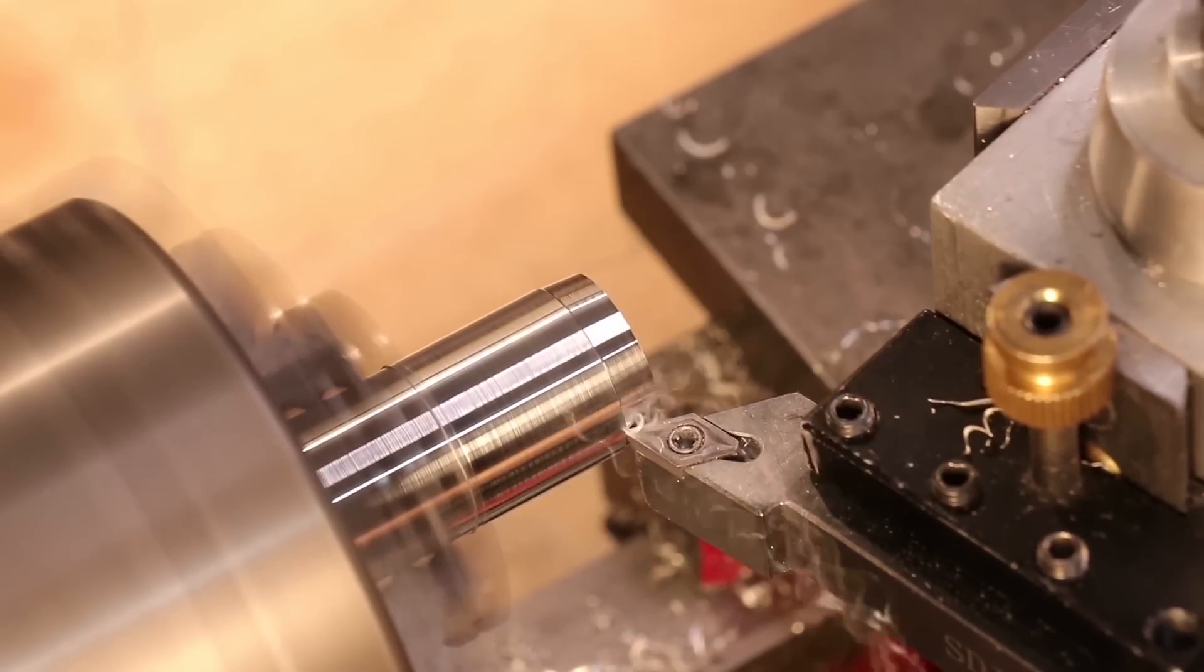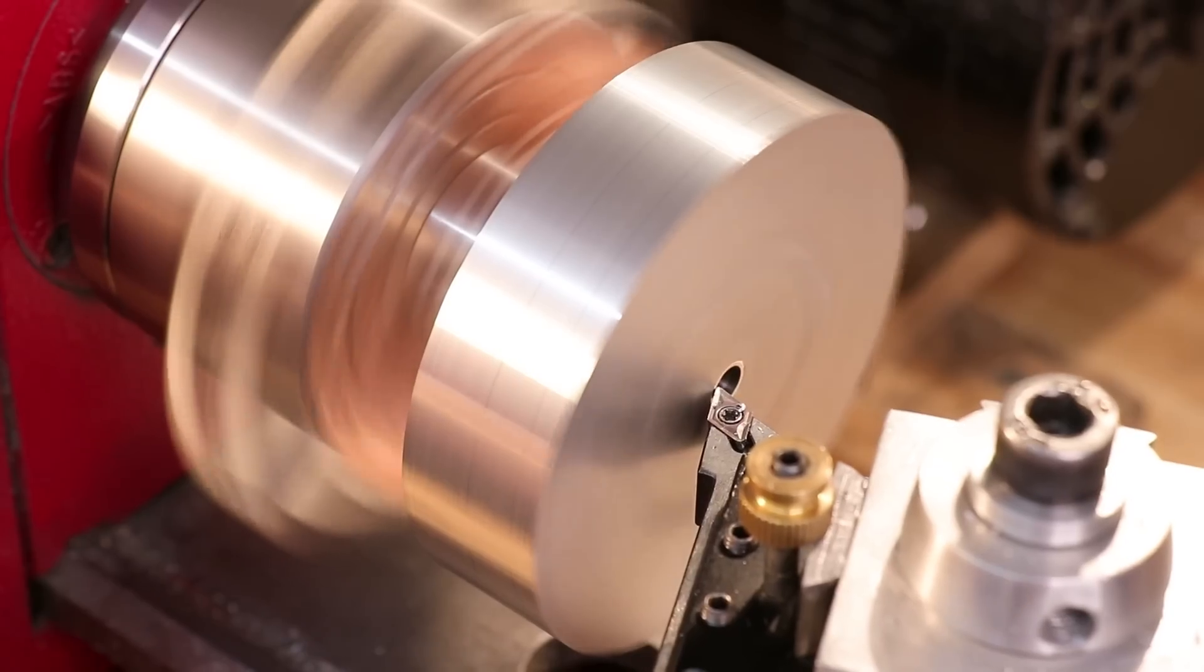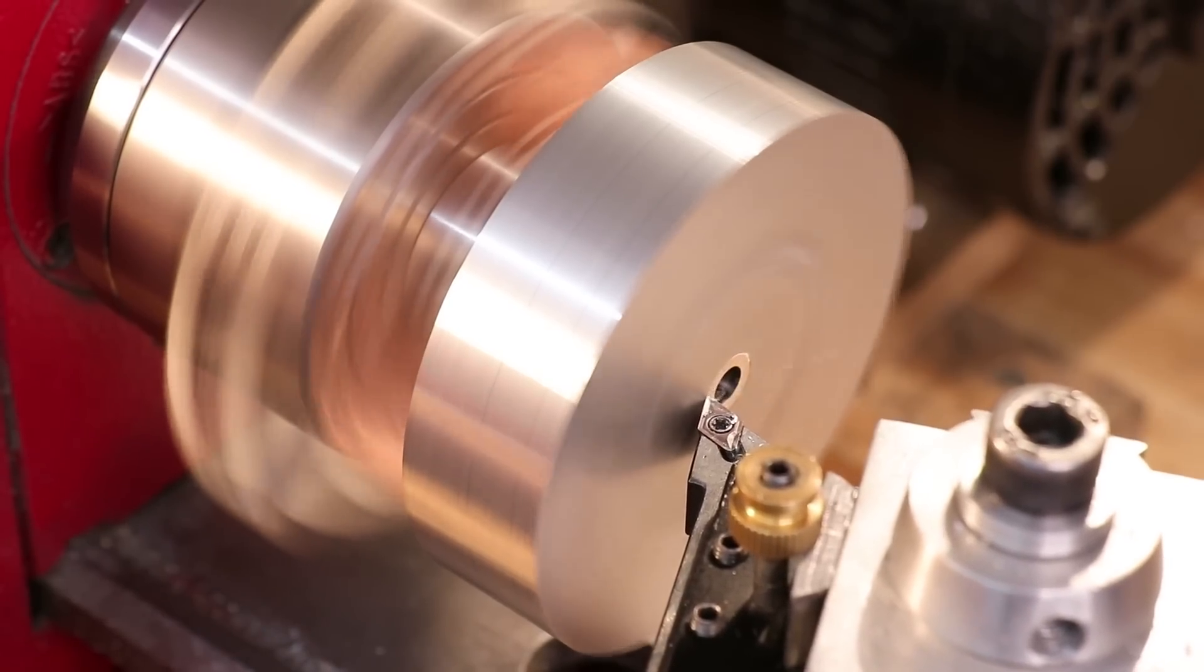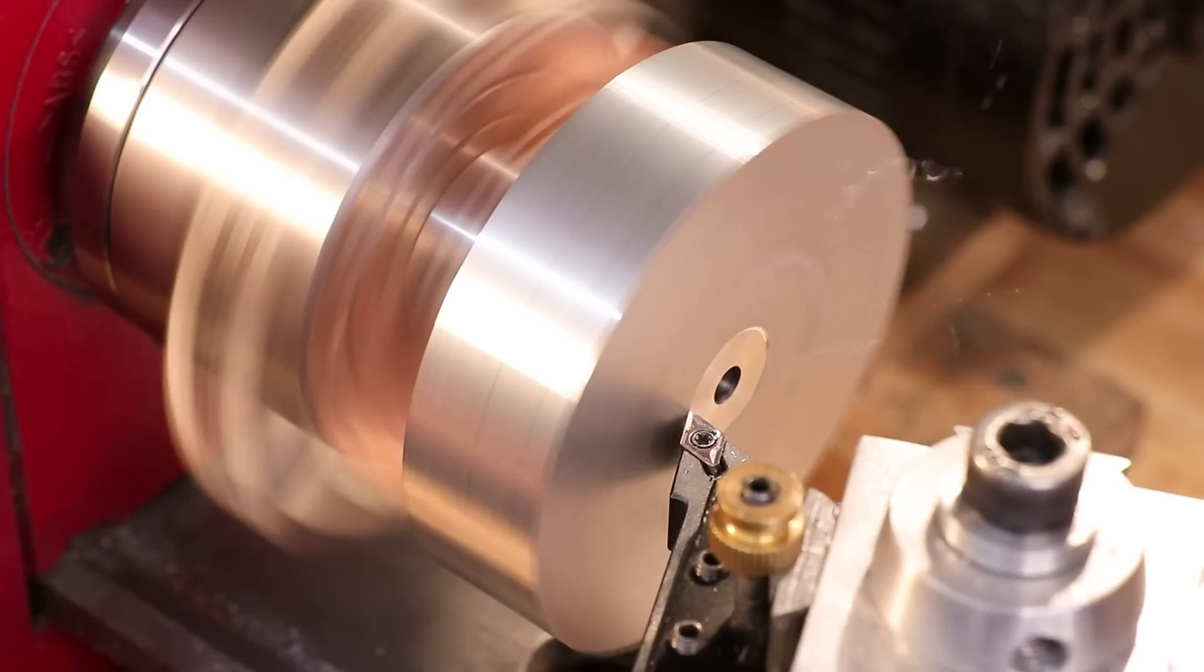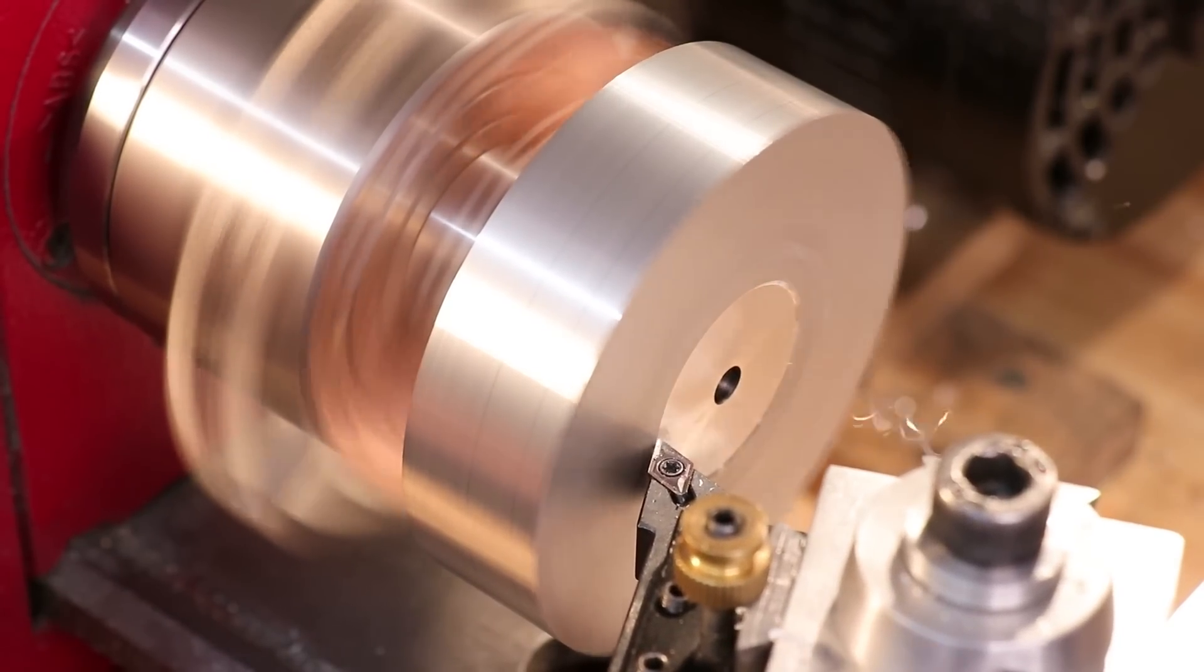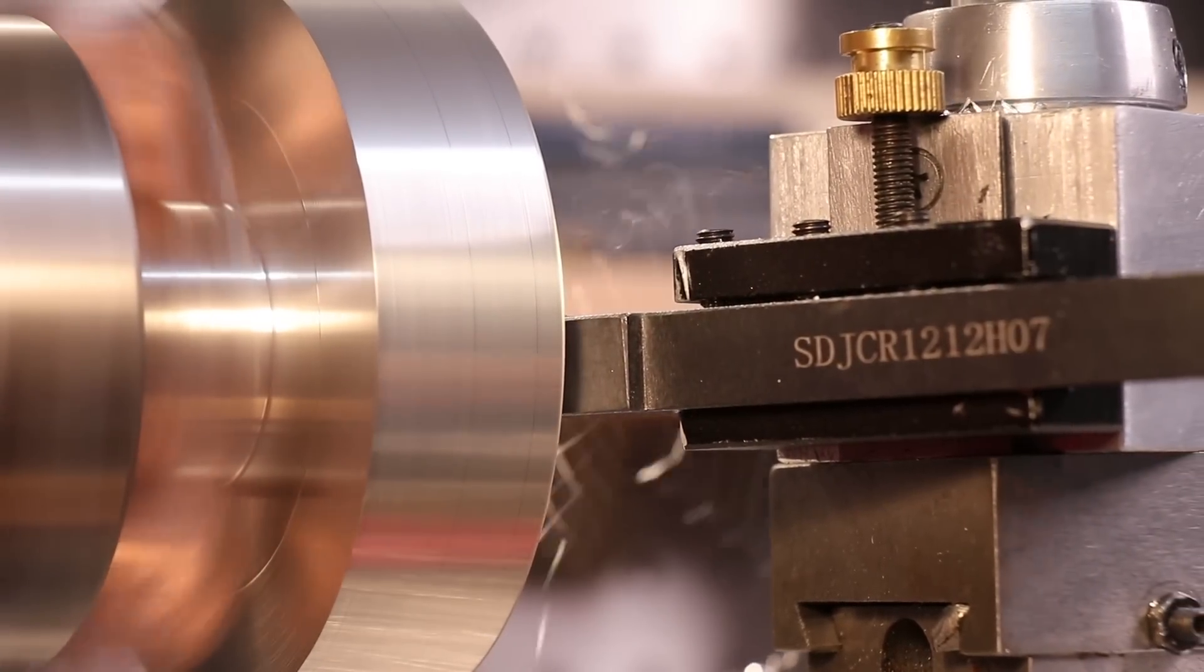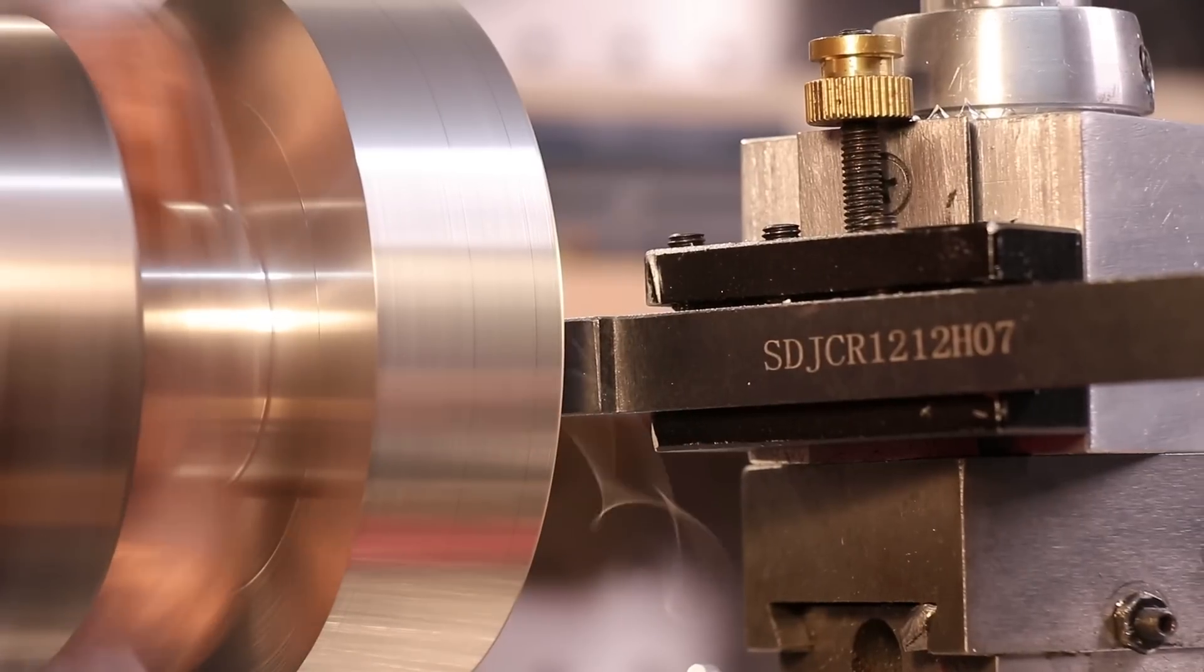Number two, lathes and mills are similar, but they work using pretty much inverse principles, and as a result, they do produce, or at least specialize, in producing the opposite types of work. Lathes hold and spin a workpiece, and a tool is used to remove material. This allows you to make really accurate parts with a cylindrical profile.